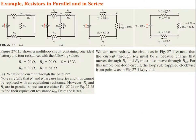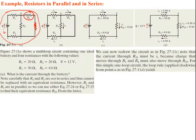The figure shows a multi-loop circuit containing one ideal battery and four resistances. This is our original circuit. Note that R2 and R3 are in parallel — you could move R3 down and see that pretty easily. We're trying to find the current I through this battery. R1 and R2 are not in series, so we can't just add them. However, R2 and R3 are in parallel, so we can find their equivalent resistance R23.